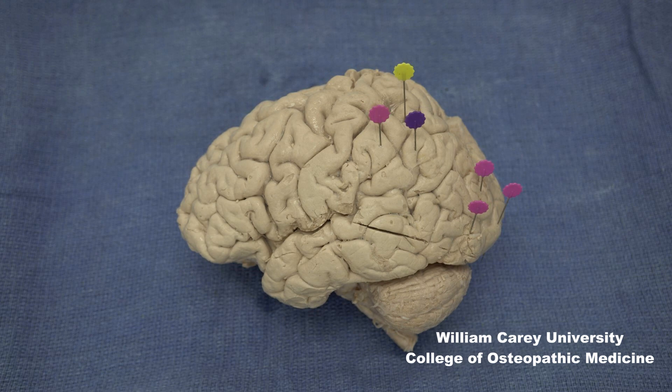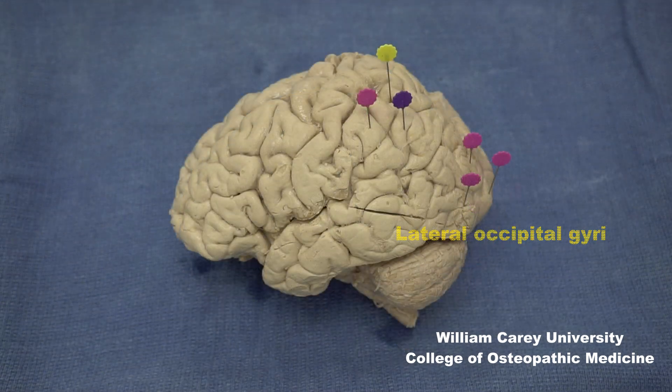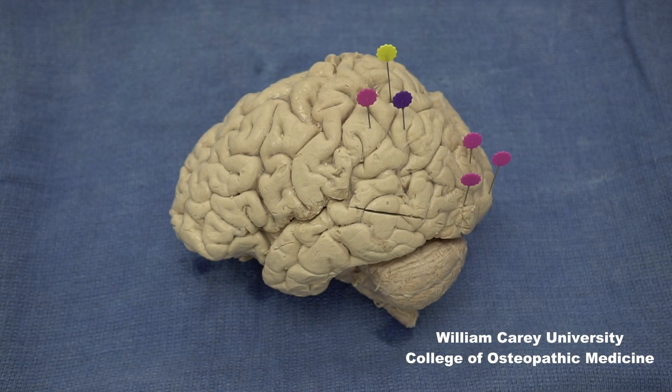I have added a group of three pink pins to the occipital area. This region is occupied by the so-called lateral occipital gyri, which are variable and rather inconsistent, making up the lateral surface of the occipital lobe.